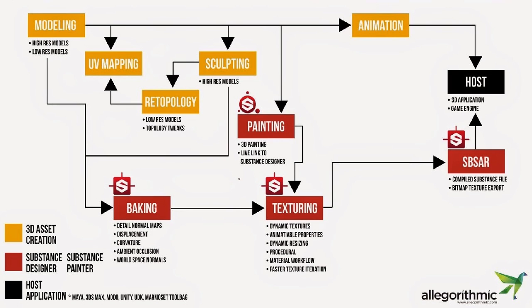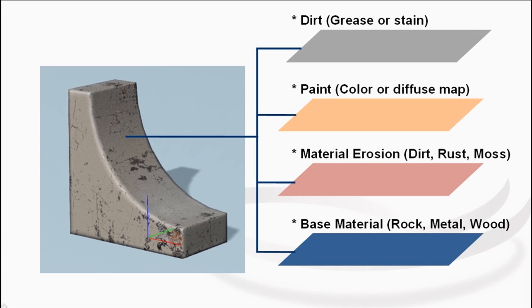All the other work is done in Substance, and your modeling and sculpting can be done in whatever tool you use, such as ZBrush or Mudbox. The Substance we're going to be using in this tutorial is the multi-material Substance that comes embedded with iClone. We have four different layers: a layer of dirt, a layer for paint, a layer for material erosion, and a base material.